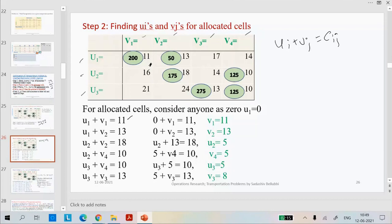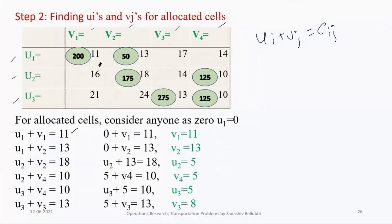For the second cell: U1 plus V2 equals 13. For this one: U2 plus V2 equals 18. Next: U3 plus V3. Then: U2 plus V4 equals 10. And the last one: U3 plus V4 equals 10. Likewise, we need to write the equation for each allocated cell.